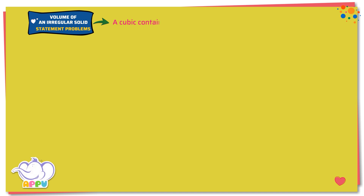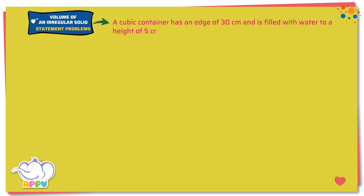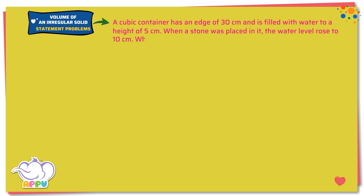A cubic container has an edge of 30 centimeters and is filled with water to a height of 5 centimeters. When a stone was placed in it, the water level rose to 10 centimeters. What is the volume of the stone?